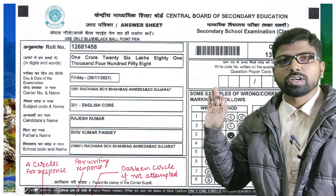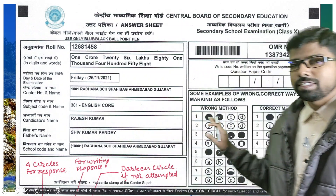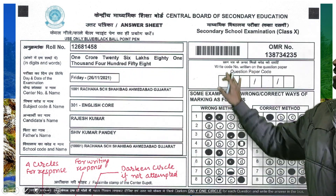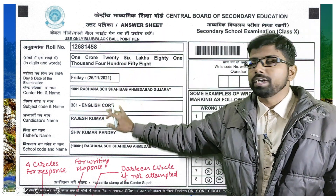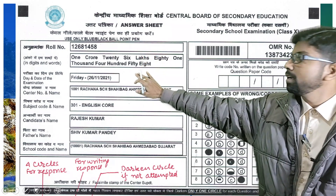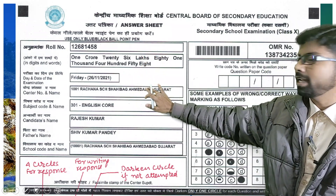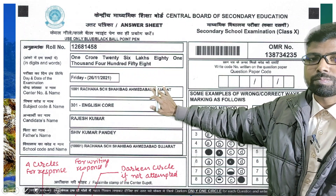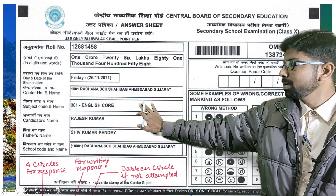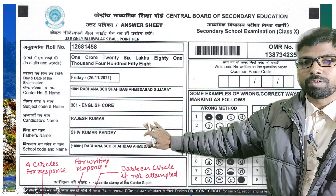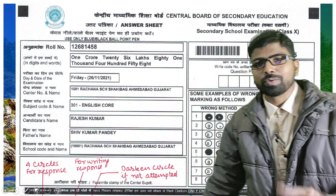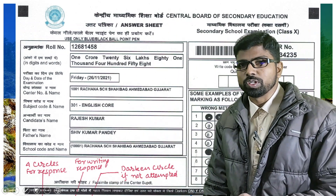For schools conducting this for the first time: Part 1 is completely preprinted with the student's data — starting from roll number, invigilator name, date, exam center name, exam center code, subject name, subject code, student name, father's name, and school details. All of this will be preprinted. I have covered this in my last videos, so I don't want to waste your time on it again.